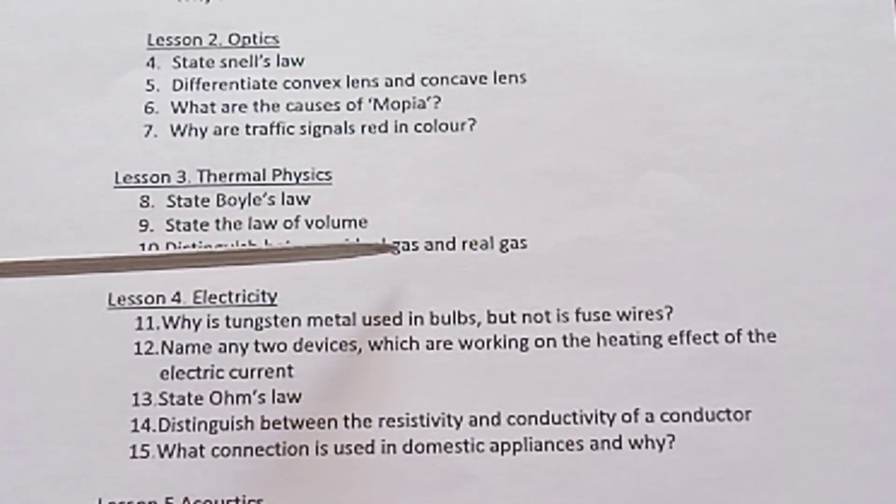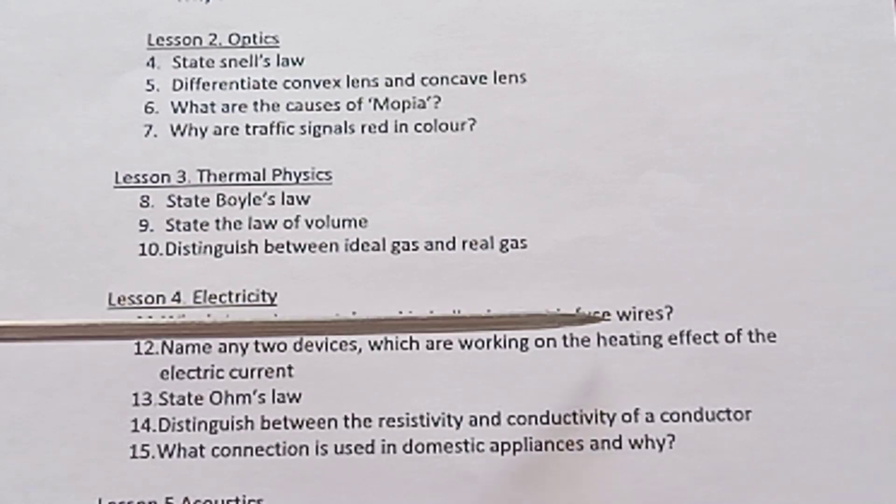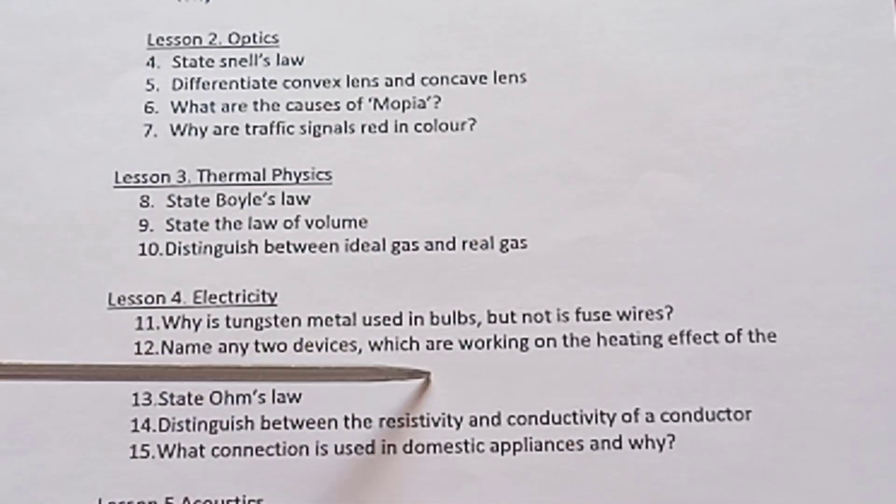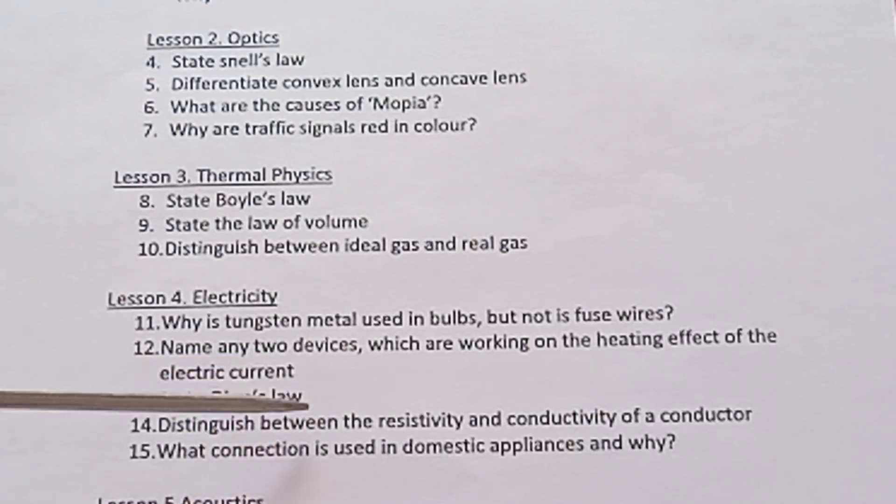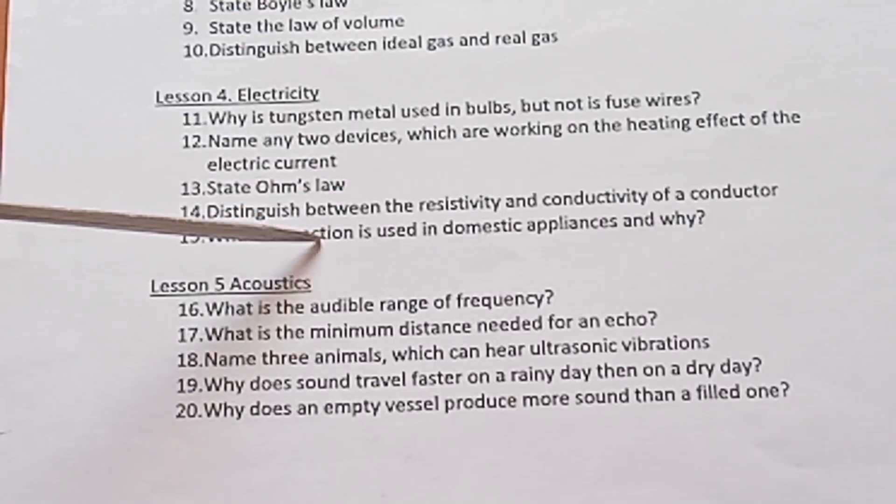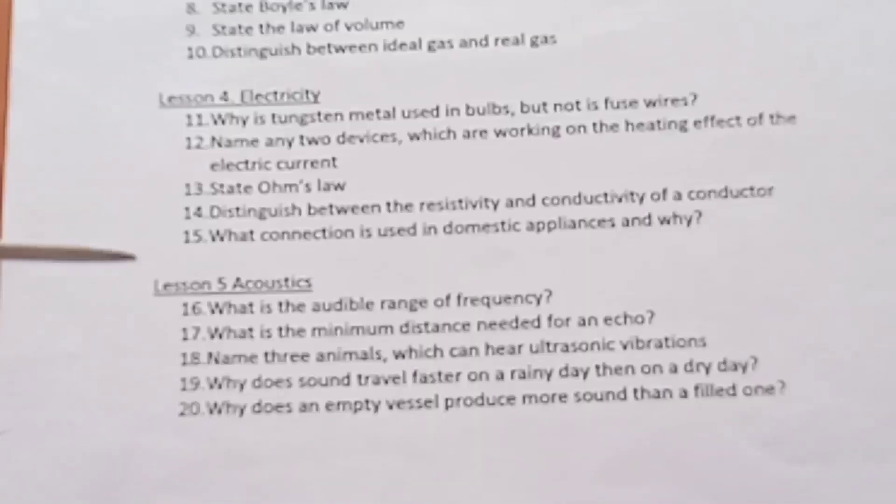Lesson 4 Electricity. Why is tungsten metal used in bulbs but not in fuse wires? Name any two devices which are working on the heating effect of the electric current. State Ohm's law. You have to write Ohm's law and explain each and every term involved in this law. Distinguish between the resistivity and conductivity of a conductor. What connection is used in domestic appliances and why?